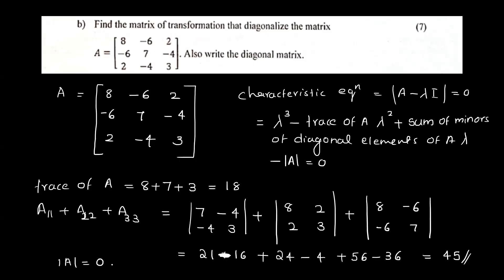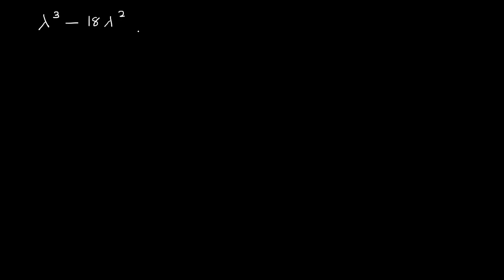The determinant of A is equal to 0. So the characteristic equation gives eigenvalues lambda equal to 15, 0, and 3.